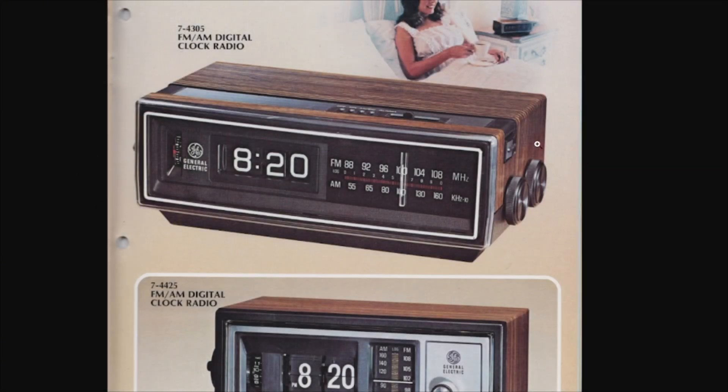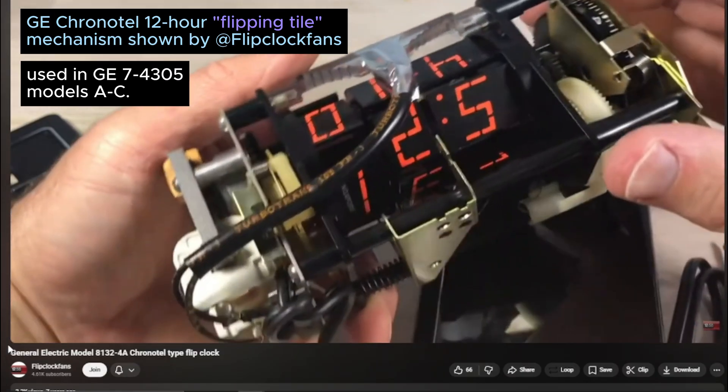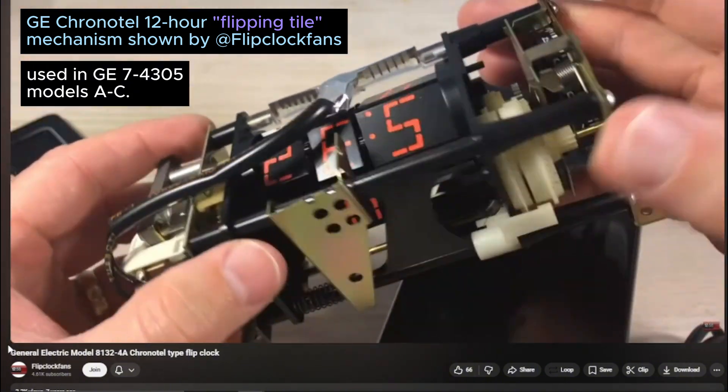Clearly, it looks very similar to what we have in the video. The key difference is that if you look closely at the numbers, the time mechanism used flipping tiles. And I just love these chrono tilt GE mechanisms. They're just fascinating. They're like little ferris wheels in there.